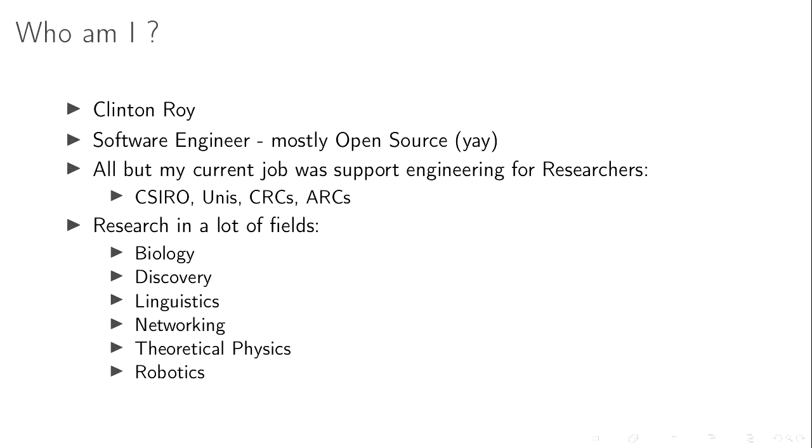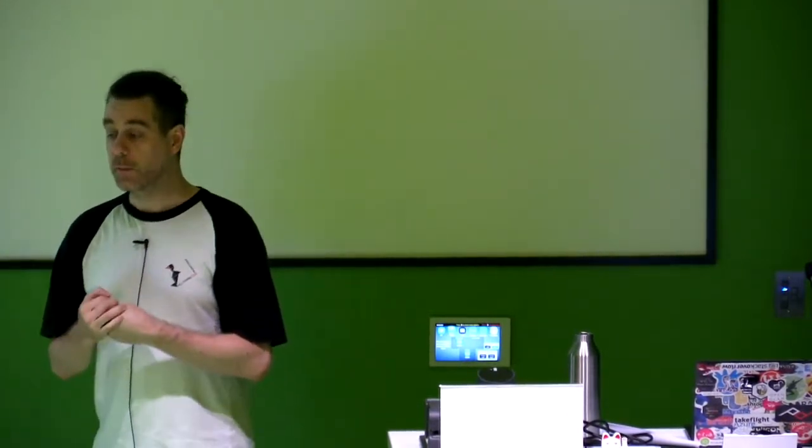So my name is Clinton Roy. I'm a software engineer from Brisbane. I'm very lucky throughout my professional career to be working with open source software almost exclusively. I either build stuff on top of open source software or I actually contribute to open source software for work. Most of my career, all up until my current job, which I've had for admittedly seven years now, have been working with research institutes. So CSIRO, different universities, CRC centres, ARC centres. If there's a government funded acronym, I've probably worked for them.